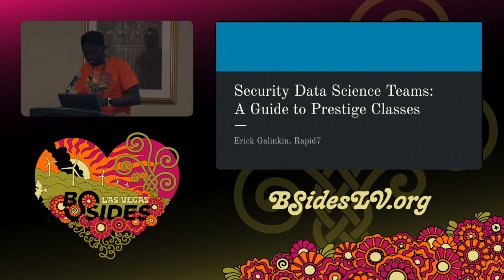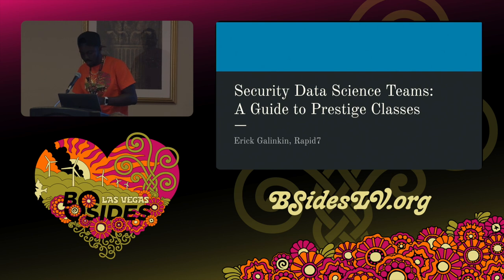Eric is a hacker and computer scientist working as principal researcher in Rapid7's office of the CTO. Presently, Eric leads R&D supporting Rapid7's managed detection and response service. An alumnus of Johns Hopkins University, he has published academic papers and given talks on security decision theory and artificial intelligence applications for security at conferences from AAAI and GameSec to DEF CON's AI Village. He has spent his entire life in different parts of information security, ranging from threat intelligence and malware analysis to cloud security and security architecture.